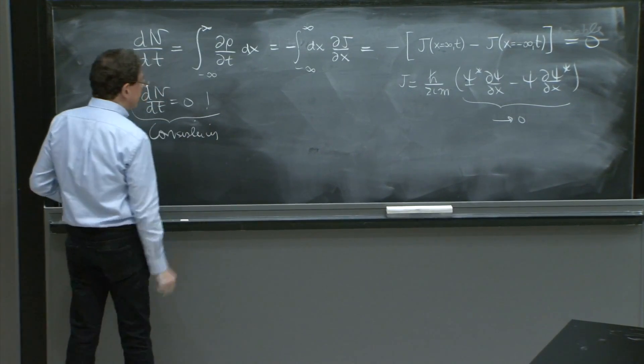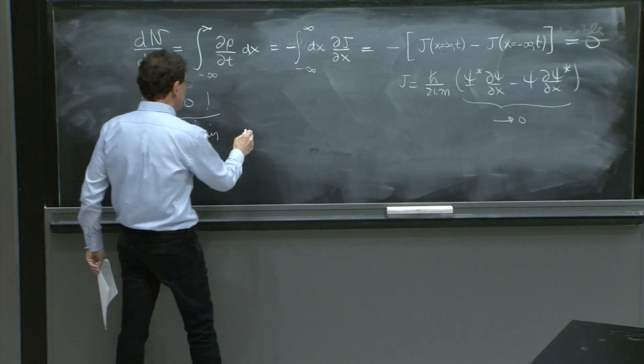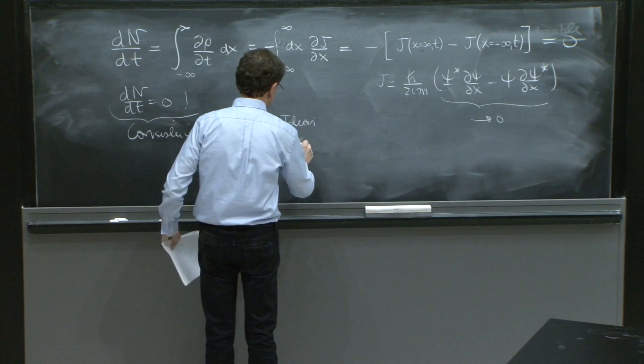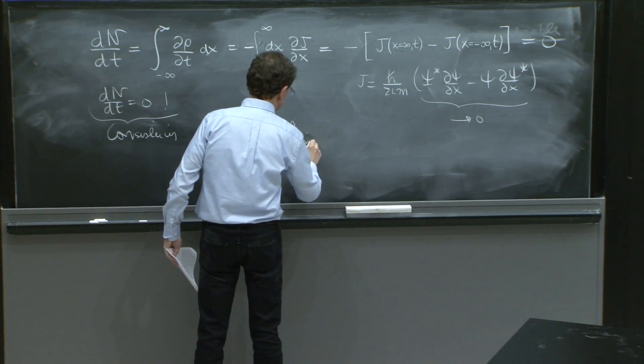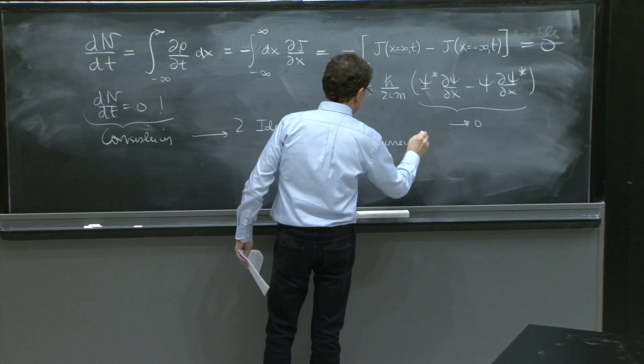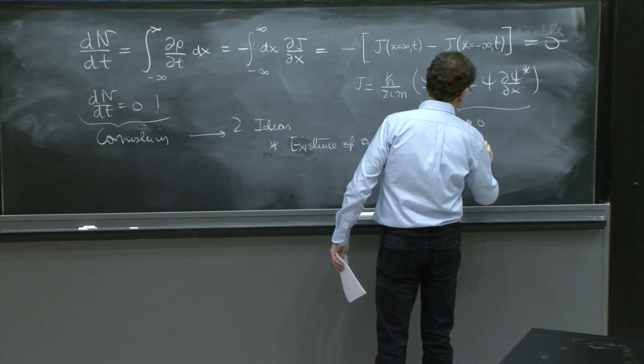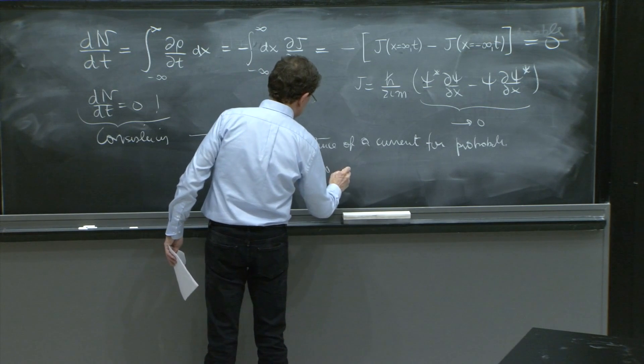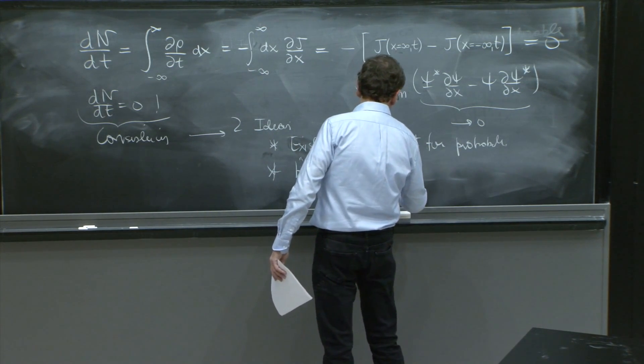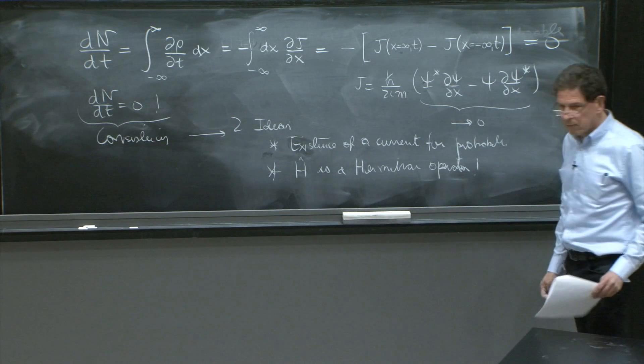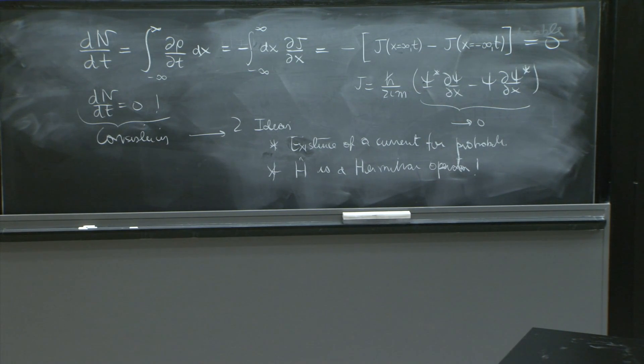Let's see. But we discovered two important ideas, two ideas. One, the existence of a current. And two, H is a Hermitian operator.